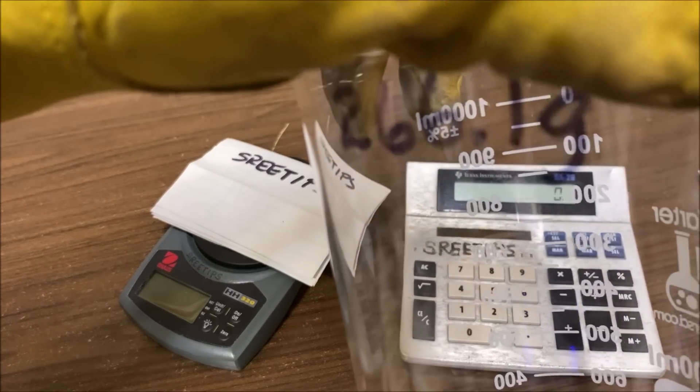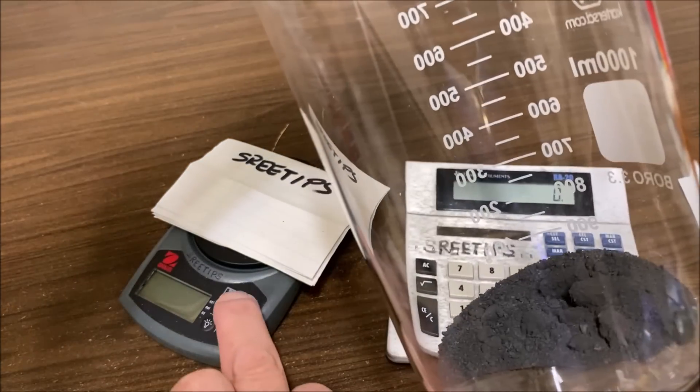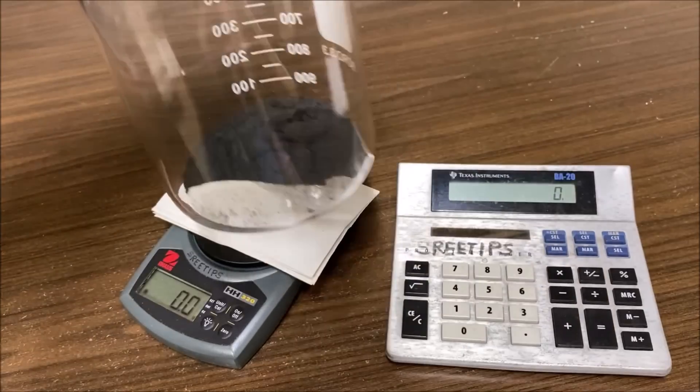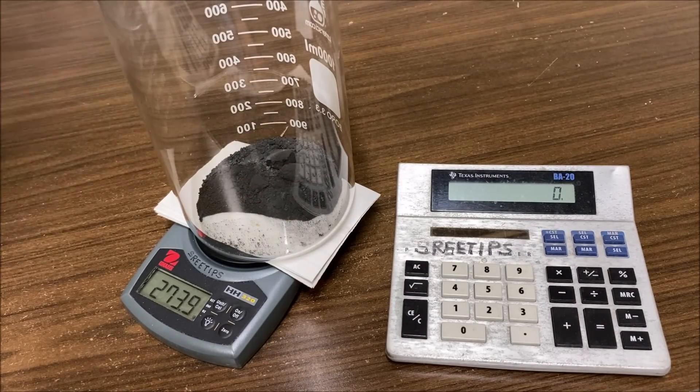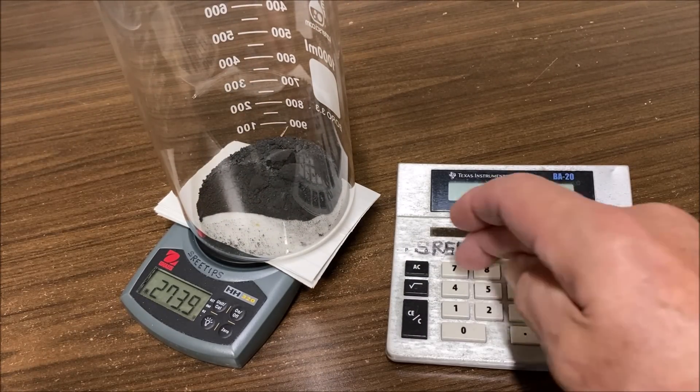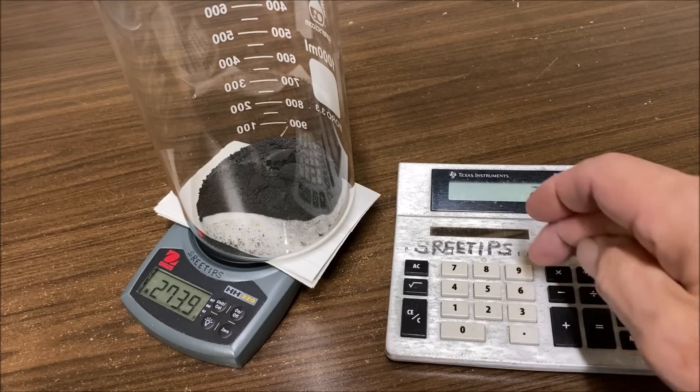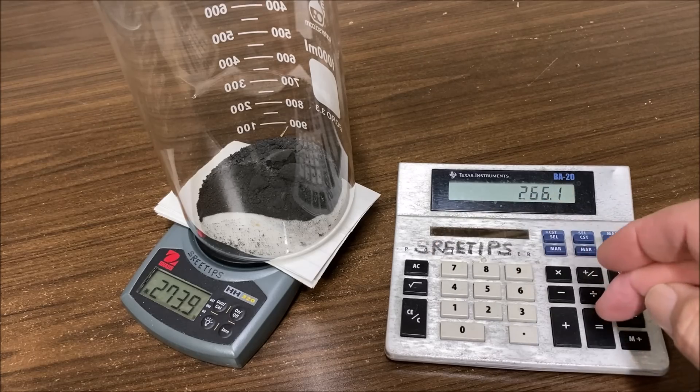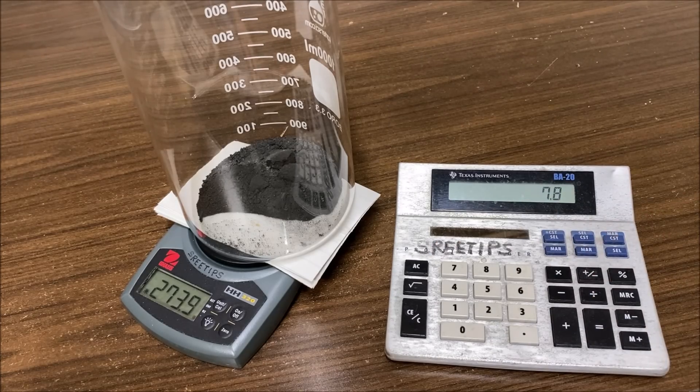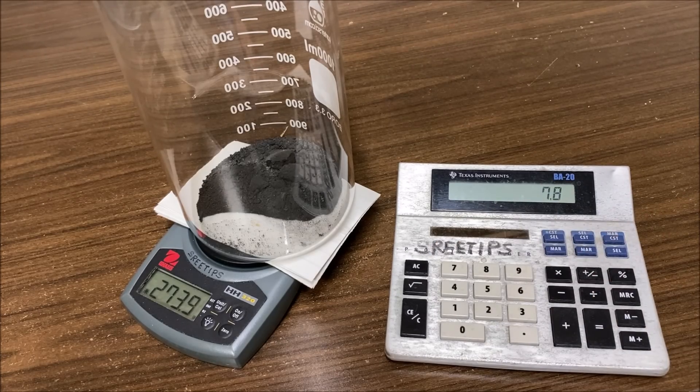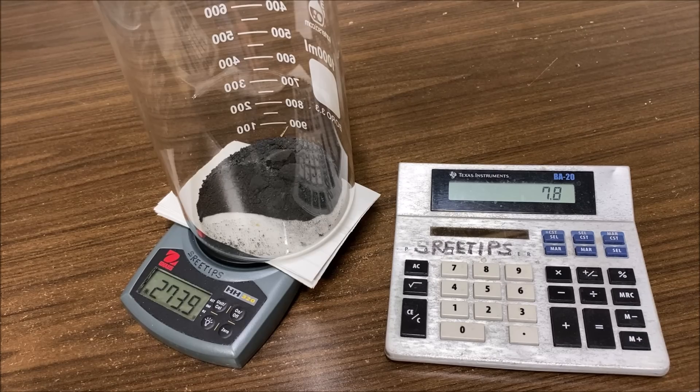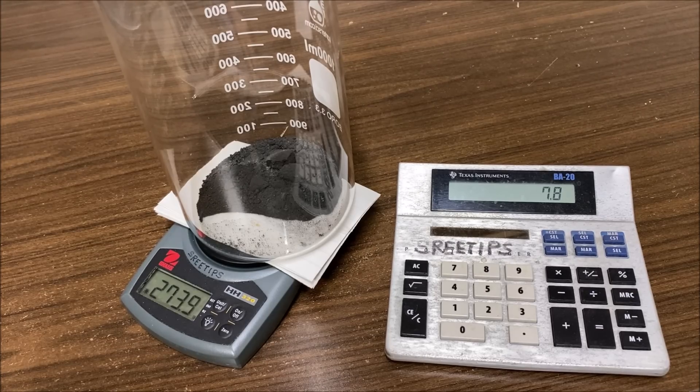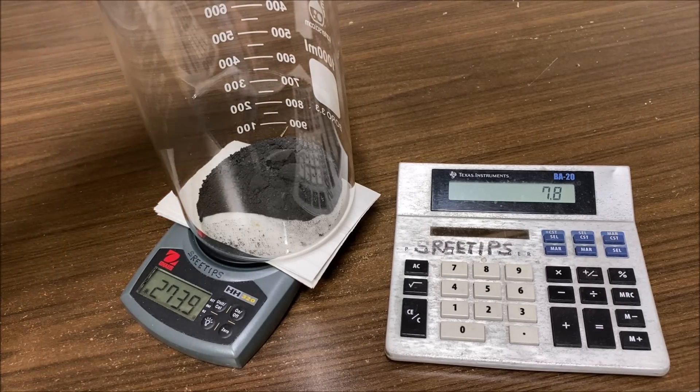I've got the weight of the beaker 266.1 and this is critical for the next part of the process. So we've got 273.9 minus 266.1 equals. So we've only got about 7.8 grams of mixed black PGMs. I was hoping for about 10 is what we really need, but we'll go ahead and go with this.